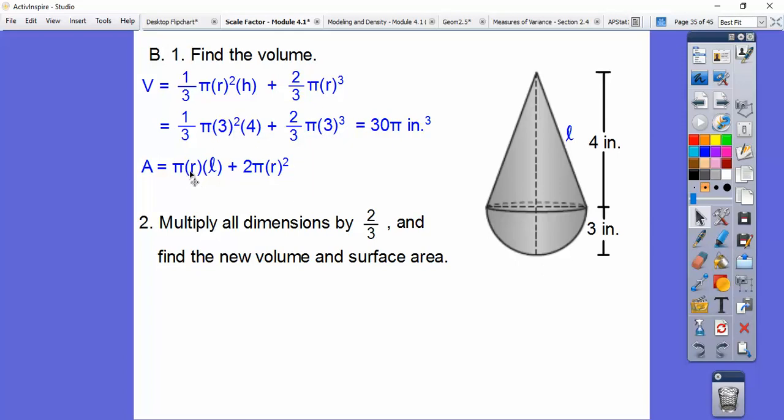r is 3, the slant height. Well remember, here's 3. Here's 4. This is going to be 5. It's a 3, 4, 5 Pythagorean triple right there. So that's where the slant height came 5. So this is 15 pi. This is 9 times 2, or 18 pi. 15 pi plus 18 pi gets us 33 pi.